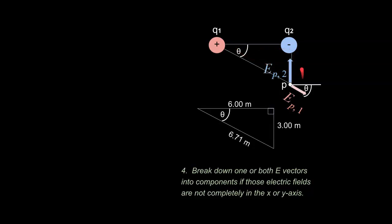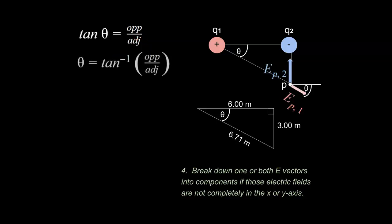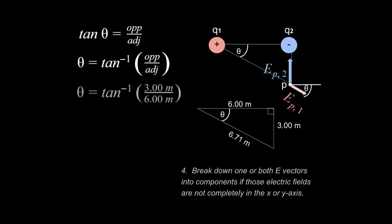Notice this triangle has an angle that is the same as the angle in the vector diagram — these are similar triangles. We want that angle to work with EP1's vector. Using tangent of theta equals opposite over adjacent, we take the inverse tangent of both sides to isolate theta. Plugging in the numbers — the legs are 6 meters and 3 meters — we get 26.6 degrees. We now know this angle and can work with the vector.